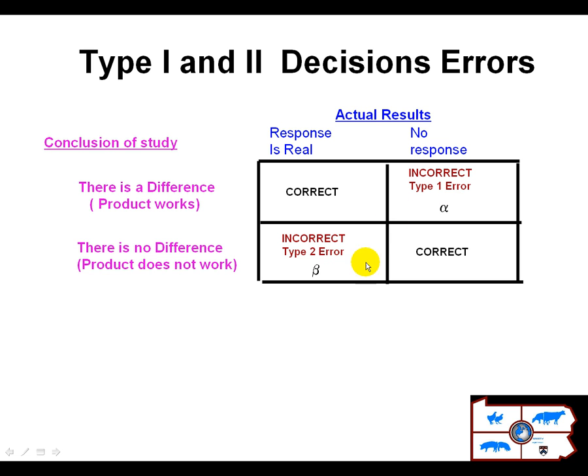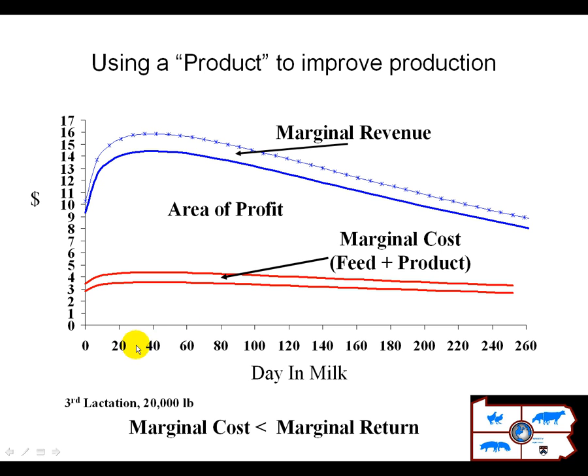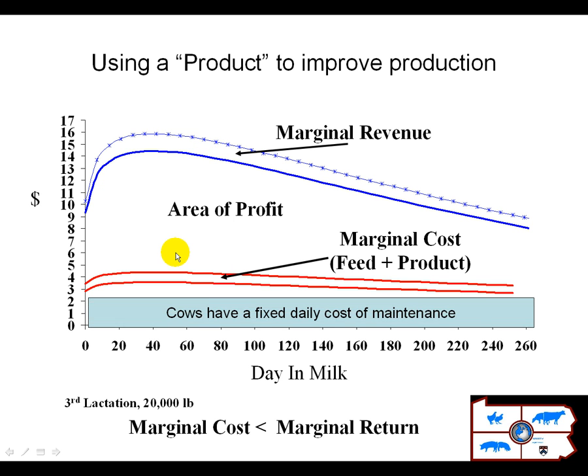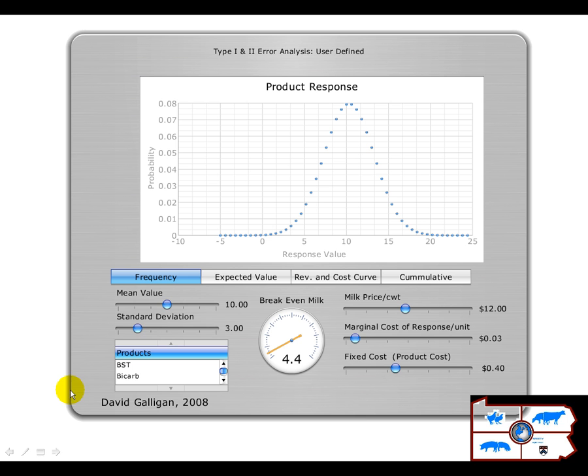We want to look at the economics of both of those. On a marginal basis, we know that when we use a product, the feed's going to go up plus the cost of the product, and we're hoping the marginal response exceeds this area. Of course, cows have a fixed cost of maintenance that cancels out. Therefore, we're only looking at the marginal, and what makes this interesting is that the response can be variable.